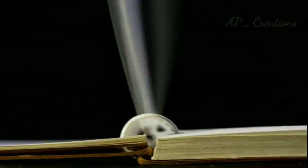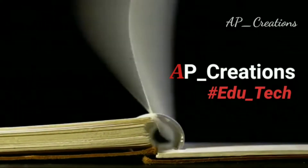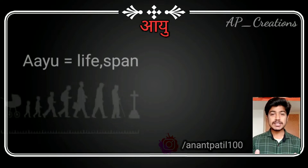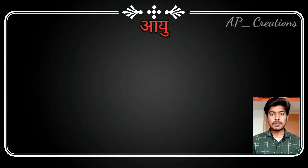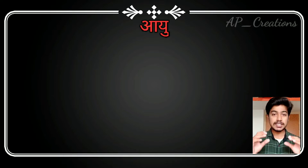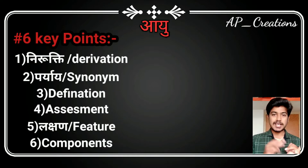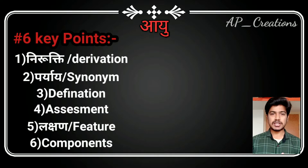Hi friends, this is a good day. Let me begin with Padartha Vijnana, first topic that is Ayu. I am Anand Patil from AP Creations. Let us study Ayu. Before going to the topic, you have to keep six key points in mind: first, nirukti as derivation; second, synonym as pariyaya; third, definition; fourth, assessment; fifth, feature or lakshana; sixth, components. These six key points are very important.